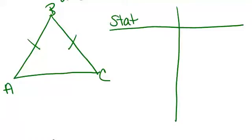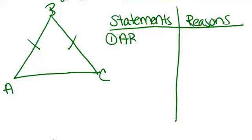So far, all that we know is that AB is congruent to BC. And that's given information because it's an isosceles triangle.